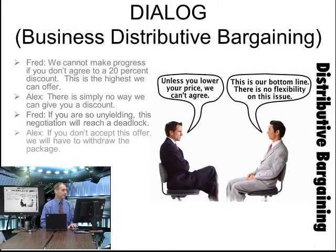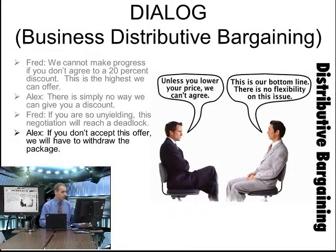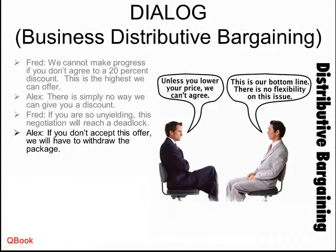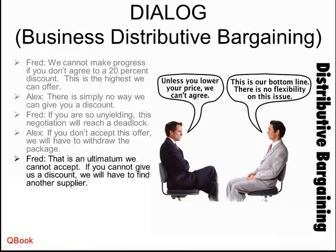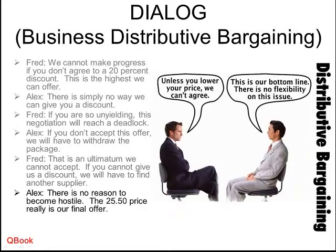Alex responds: if you don't accept this offer, we will have to withdraw the package — meaning take back and end the negotiation. Fred says: that is an ultimatum — we cannot accept. If you cannot give us a discount, we will have to find another supplier. Alex replies: there is no reason to become hostile. The $25.50 price really is our final offer. Even if you get angry, I can't give you any discount.